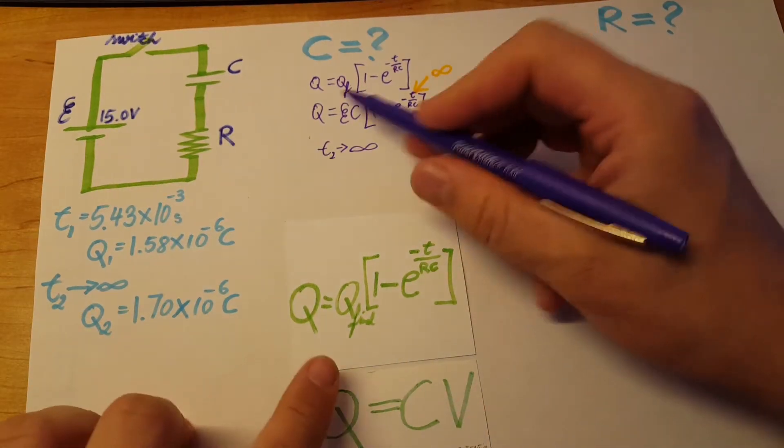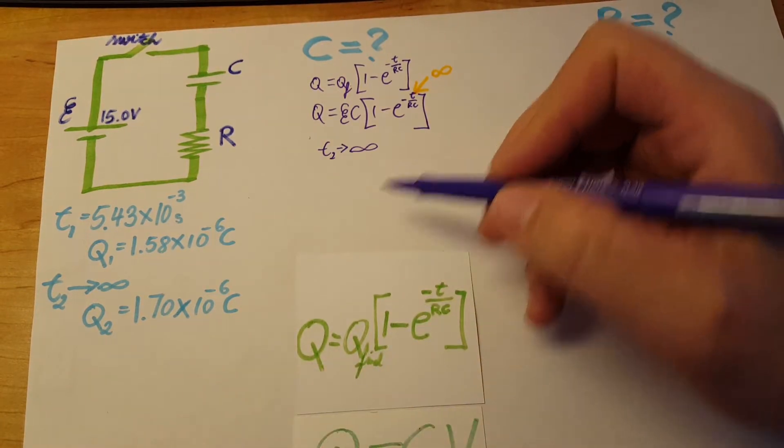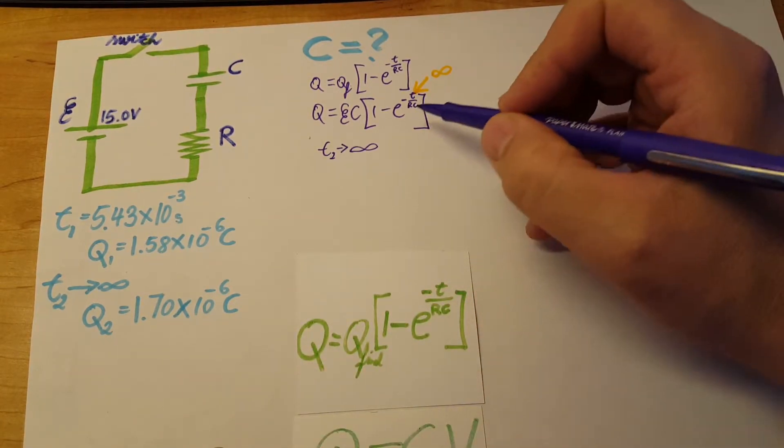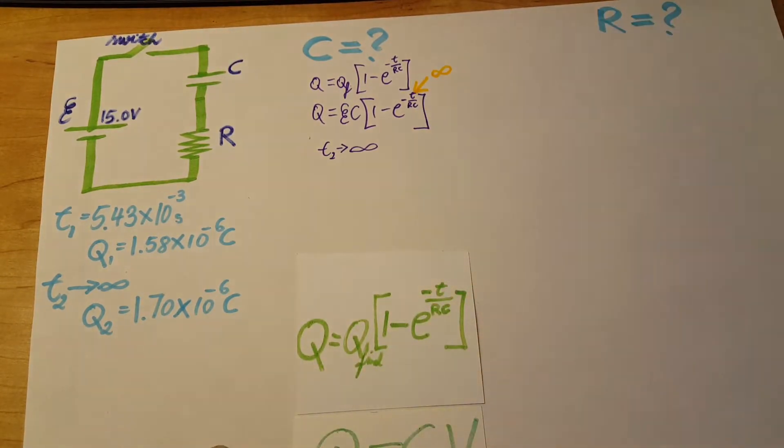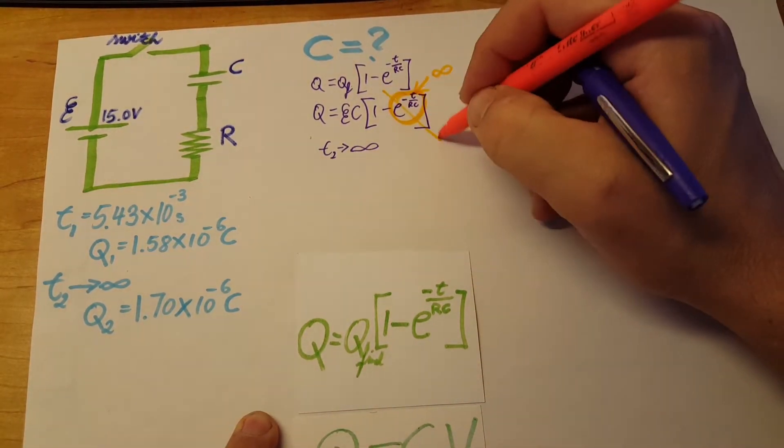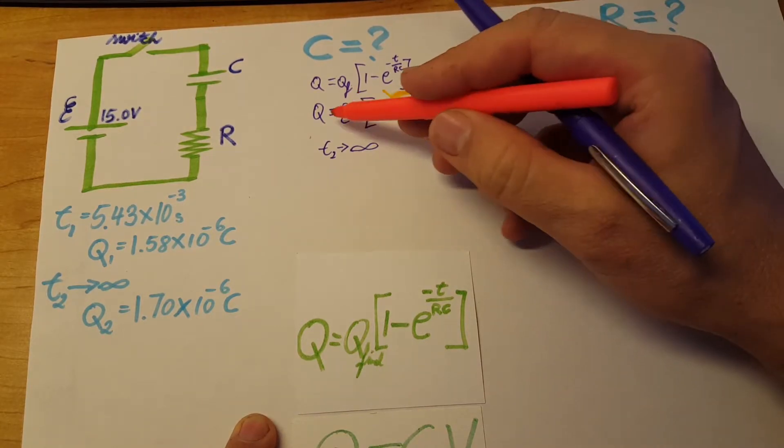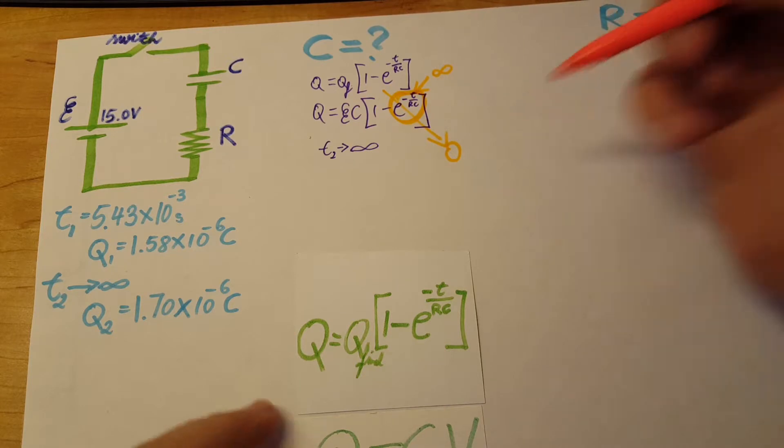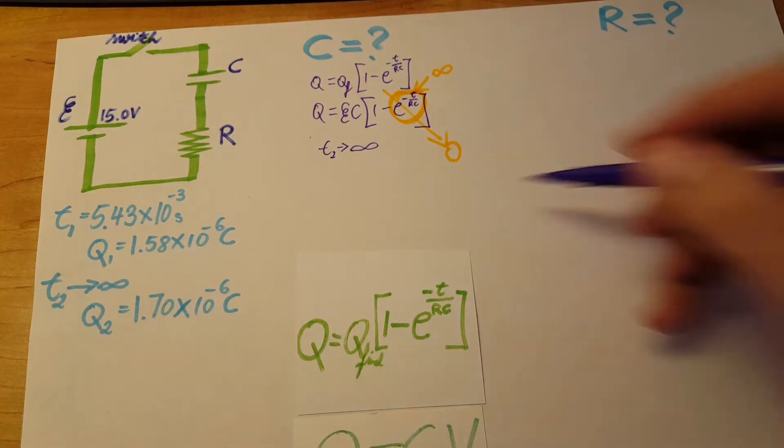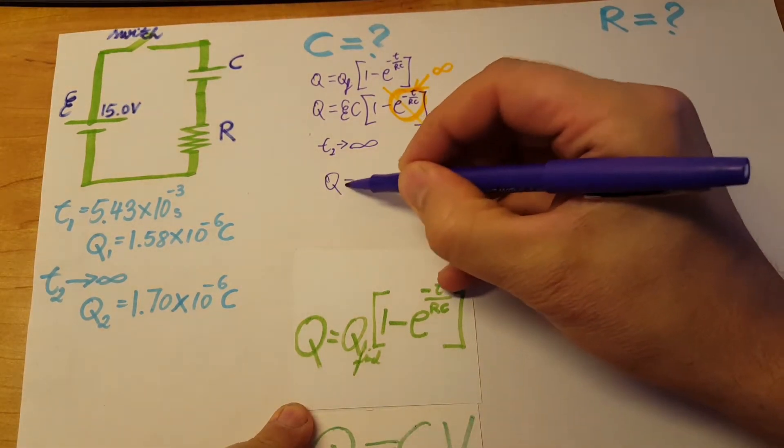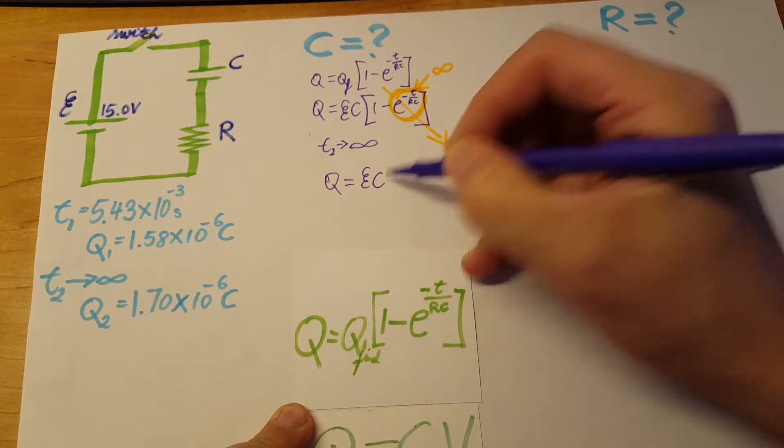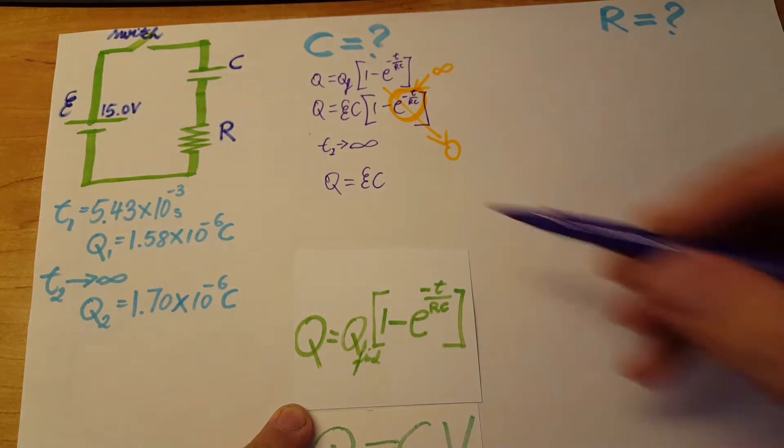If we plug this in, this whole term is gonna go to zero, so we're gonna have Q equals EC times one.